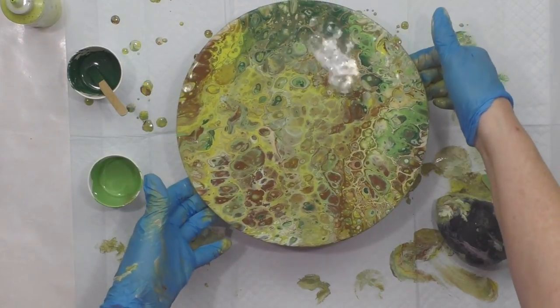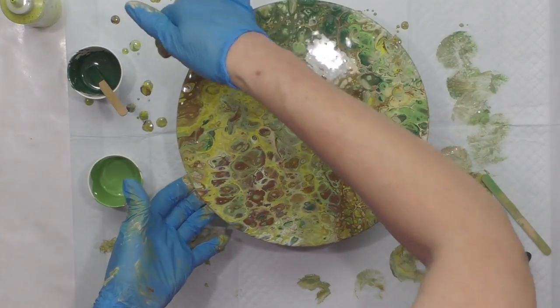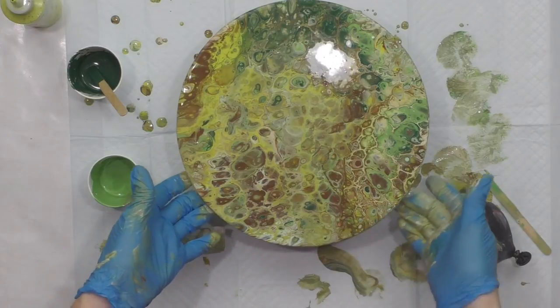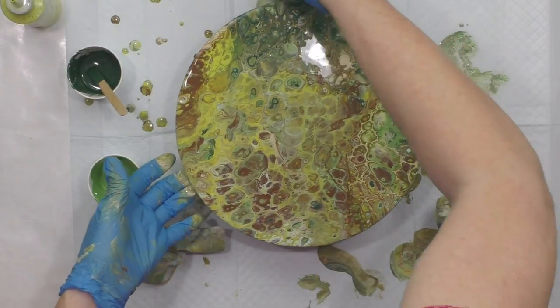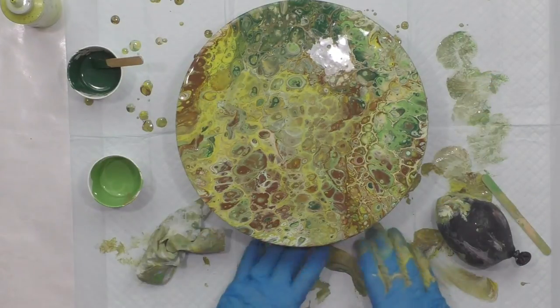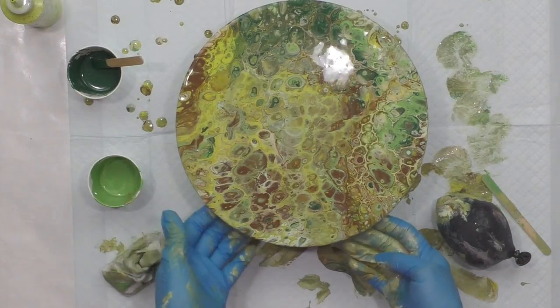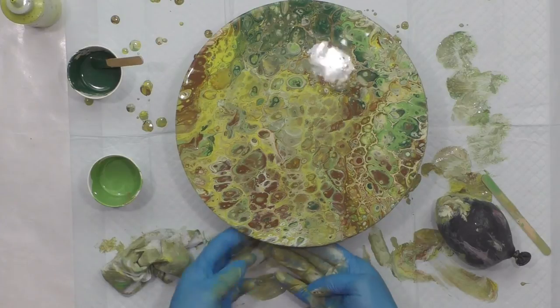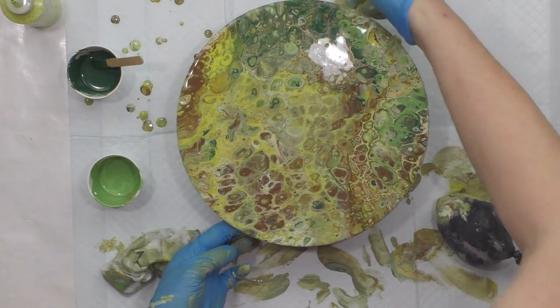The other thing when you're doing a round is to take your fingers and go around. Even with canvases, go around the edge of the bottom of the piece. Get those drips as best you can.